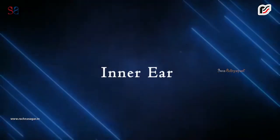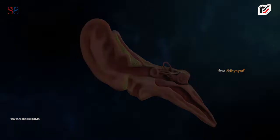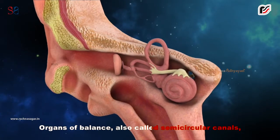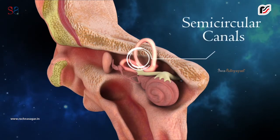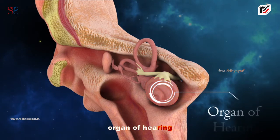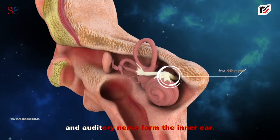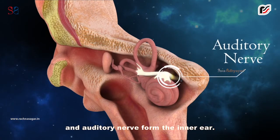C. Inner ear. The organ of hearing and auditory nerve form the inner ear.